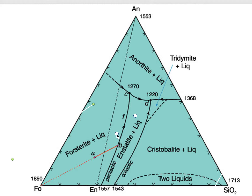Both of these other compositions fall to the right of that dashed line, which means when those two are done crystallizing, there will be no forsterite left. Even though a composition might begin crystallizing forsterite first, that forsterite will react out along the peritectic. So that's the first thing to look at.